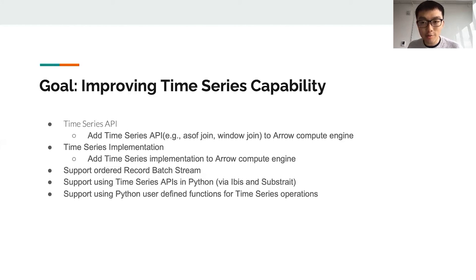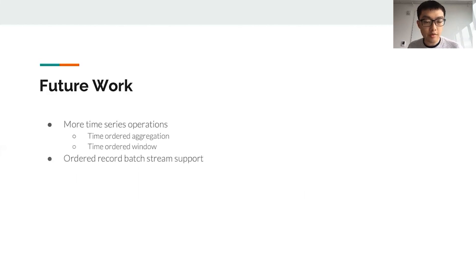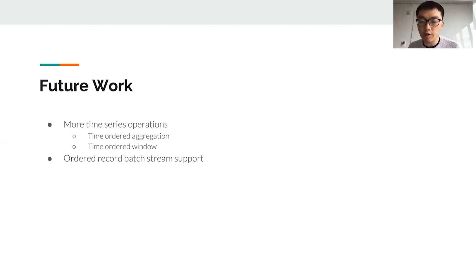The Arrow team has already added some Python UDF support, and we're working on passing that through the IBIS and Substrait layer. Currently in progress: a PR for implementing as-of-join is close to being merged, and there are other PRs around UDF support via IBIS and Substrait. Looking toward the end of the year, we want to actively work on time order aggregations, time order windows, and ordered record batch support. With that, I'll end this talk, and I'm happy to chat more afterwards. Thank you.